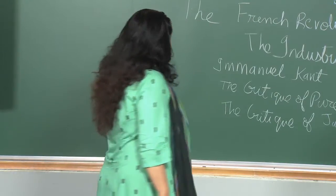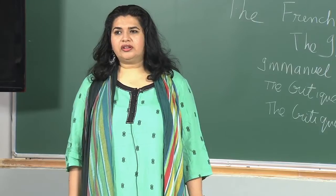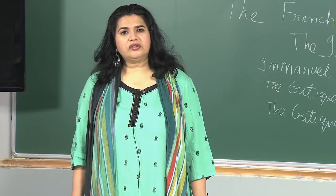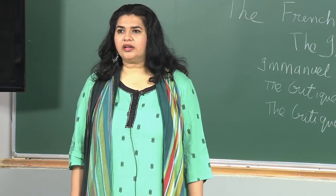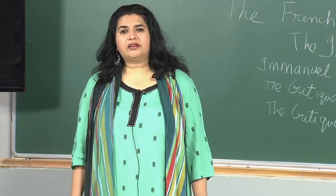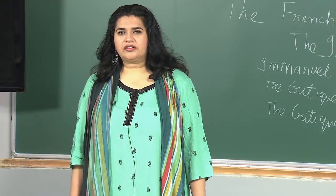Coming to the Critique of Pure Reason, this is the work that made Kant famous, published in 1781. In this work, Kant attempted to define the boundaries of human reason and knowledge. He queried about what kinds of things reason can tell us and what kinds are beyond its grasp — the possibilities and limitations of reason. This was a consequence of Locke and Hume's argument that since all knowledge comes from experience, this knowledge cannot be grounded on any necessary laws.